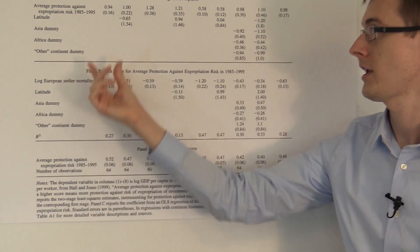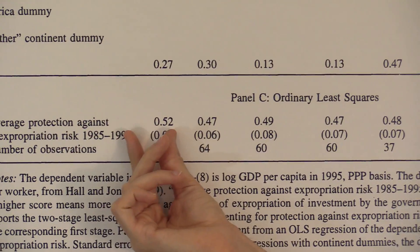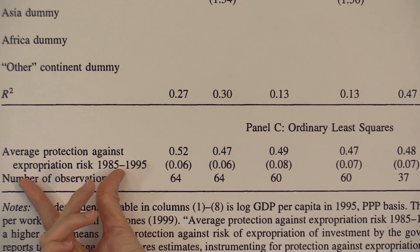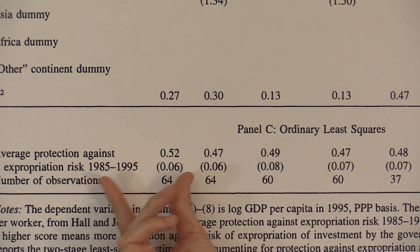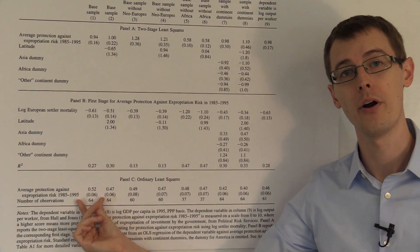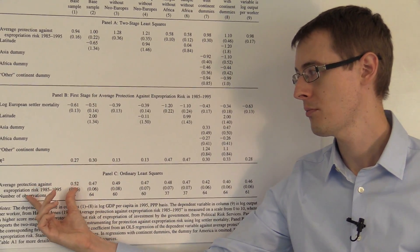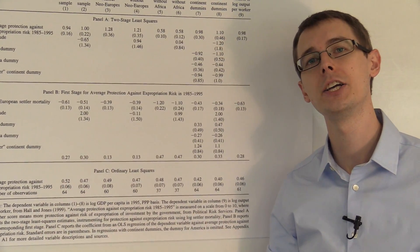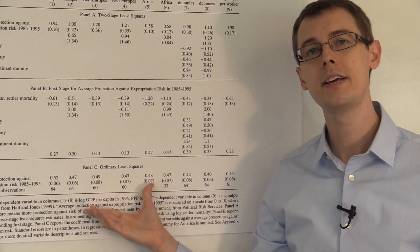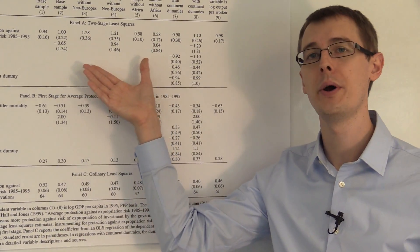So here in the first column, labeled Base Sample, we've got a coefficient of 0.52 on average protection against expropriation risk — property rights. This is just telling us the regression we looked at before: that in the data there's a positive correlation between having strong property rights and having high GDP. It's not telling us the causal effect.